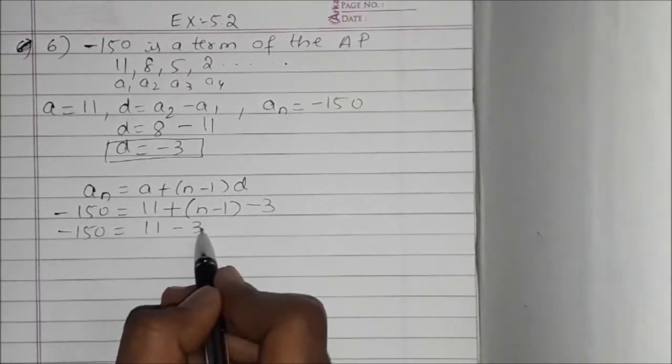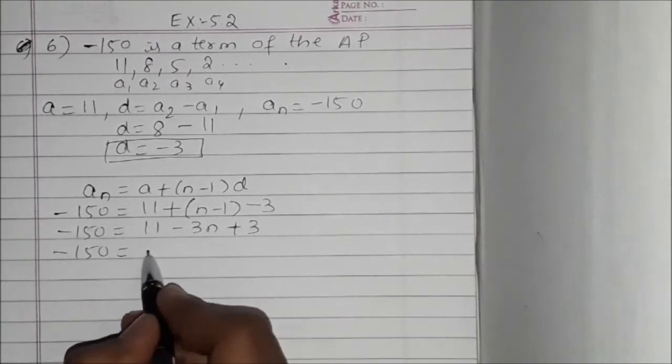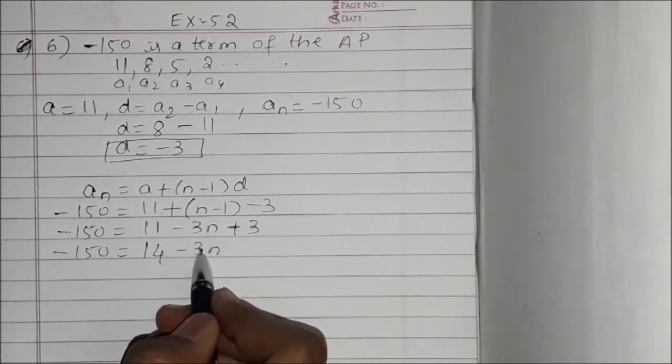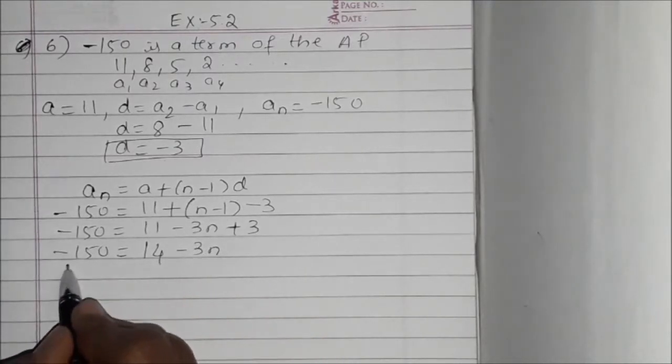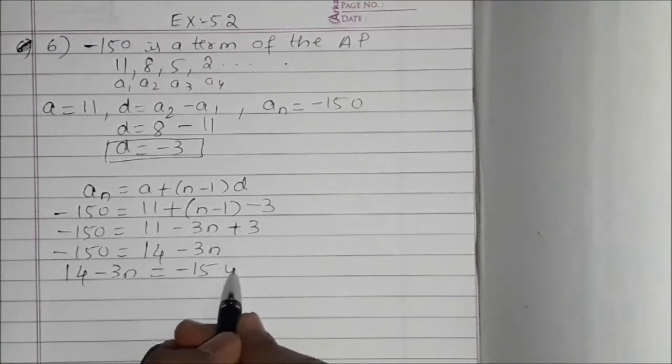Now we can write it as 14 minus 3N equals minus 150.